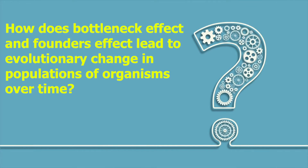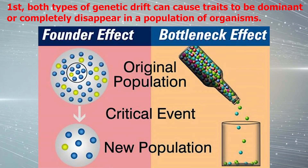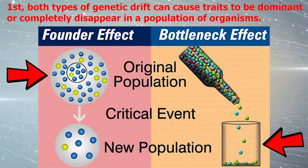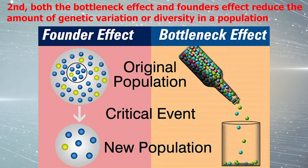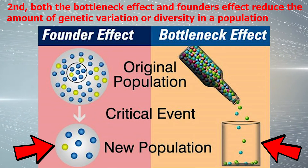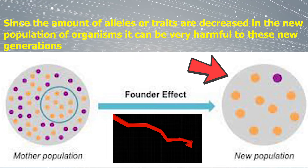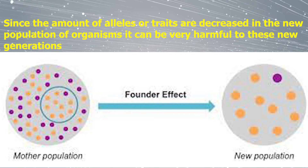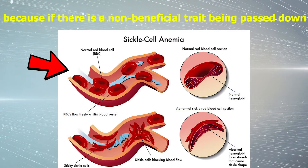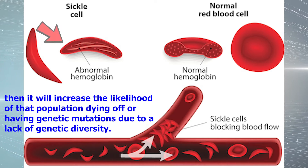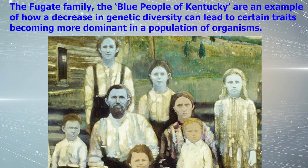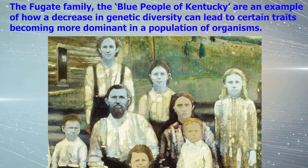So how do the bottleneck effect and founder effect lead to evolutionary change in populations of organisms over time? First, both types of genetic drift can cause traits to become dominant or completely disappear in a population. Second, both effects reduce the amount of genetic variation in a population by reducing the number of alleles or traits. Since alleles or traits are decreased in the new population, it can be harmful to new generations — if a non-beneficial trait is being passed down, it increases the likelihood of that population dying off or having genetic mutations due to a lack of genetic diversity. The Fugate family, the blue people of Kentucky, are an excellent example of how a decrease in genetic diversity can lead to certain traits becoming more dominant in a population. But that's a topic for another video.